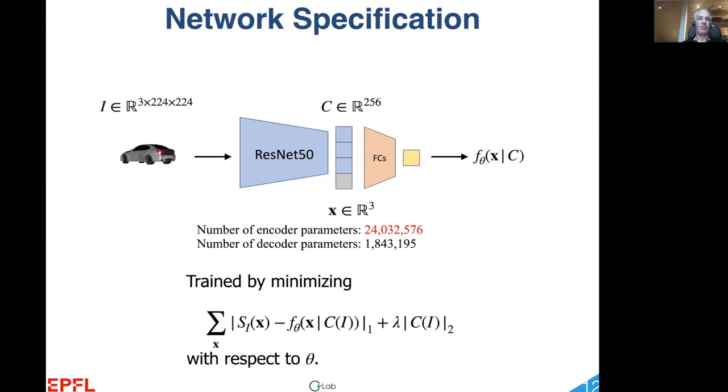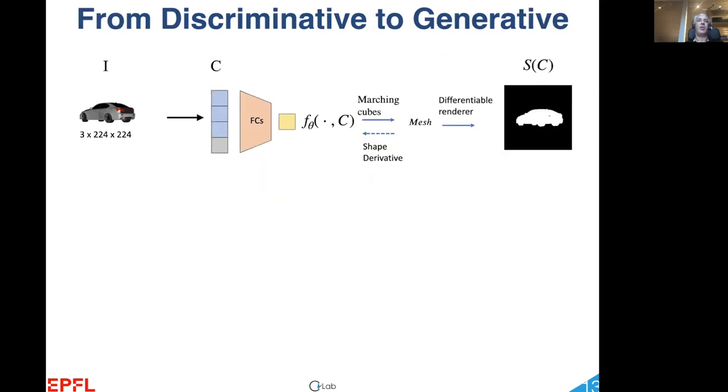The resulting codes then become inputs to the SDF F theta, which has been trained to regress the 3D shapes. A previously unseen image containing a target object can be fed to the encoder, resulting in an initial code C that is decoded into a 3D shape that roughly matches the object outline.